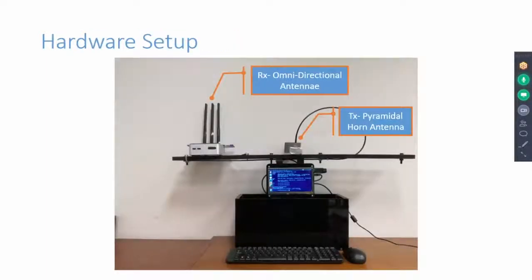We used this hardware equipment for data collection. The transmitter device is connected to one pyramidal horn antenna and the receiver node is connected to three omnidirectional antennas. Signals are transmitted at 5.18 GHz frequency with 20 MHz bandwidth using IEEE 802.11n standard.